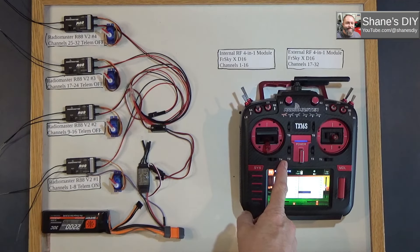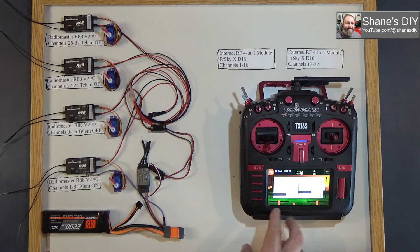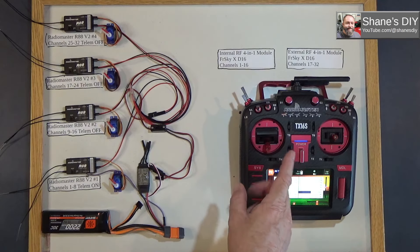The Radiomaster TX16S and other Radiomaster radios like the Boxer and the Zorro are marketed as 16-channel radios. In reality, it has 16 channels for each module.